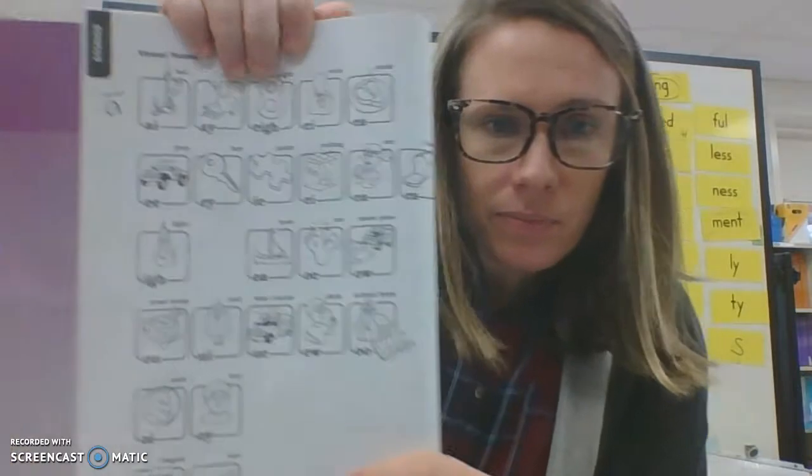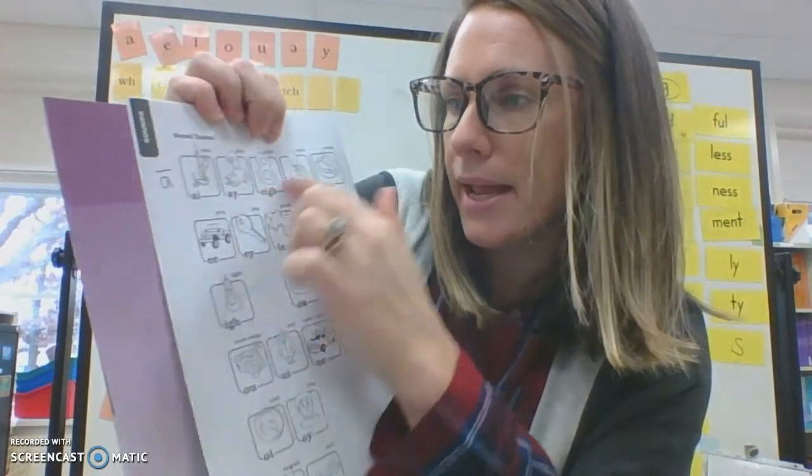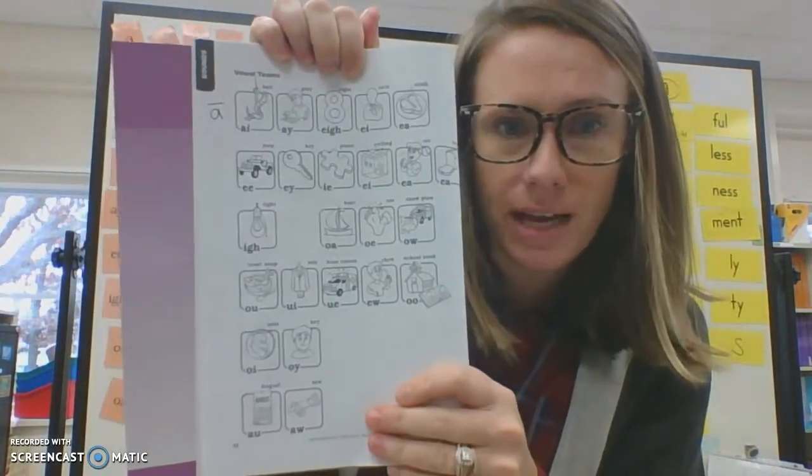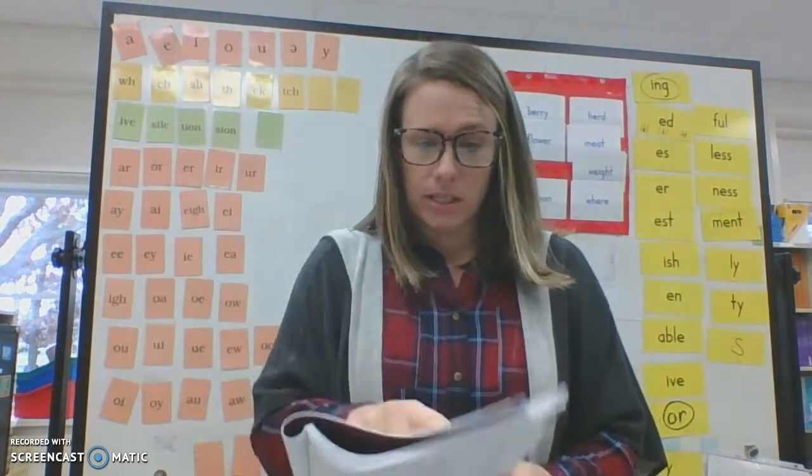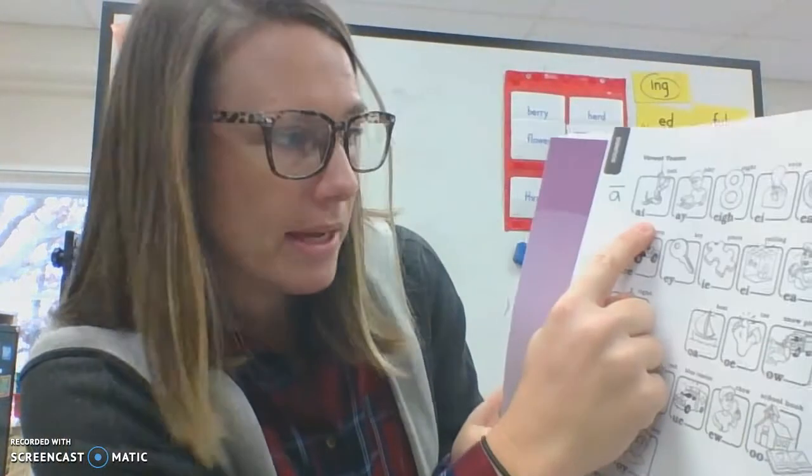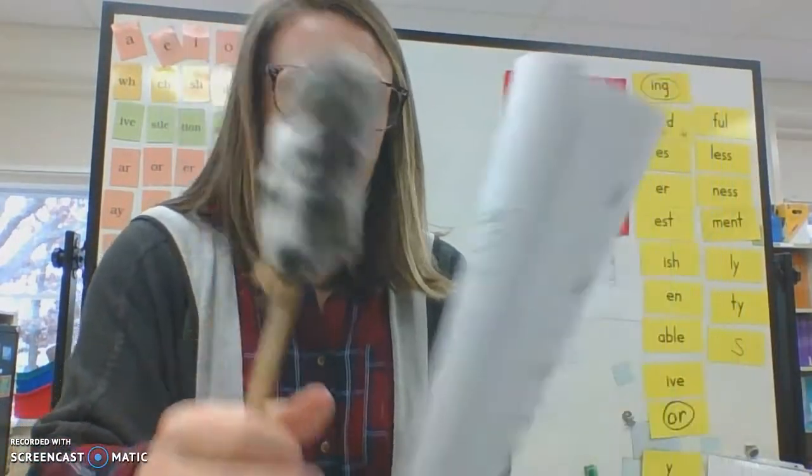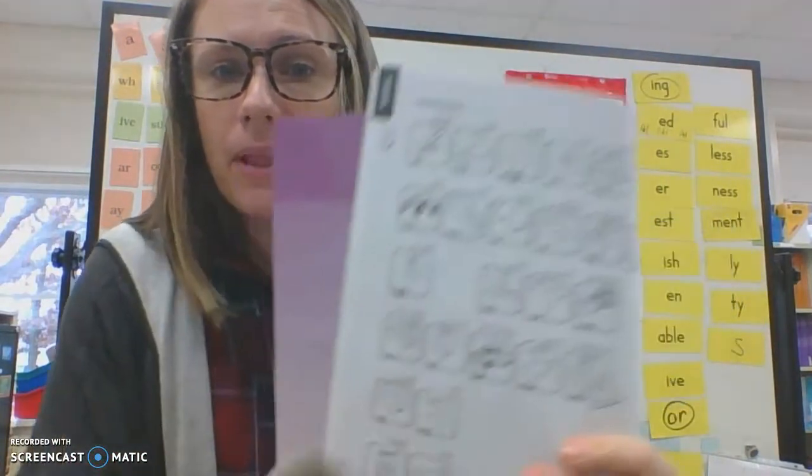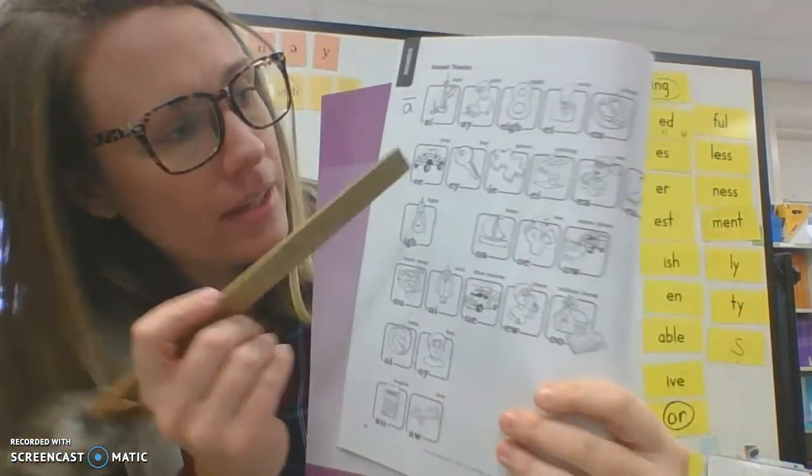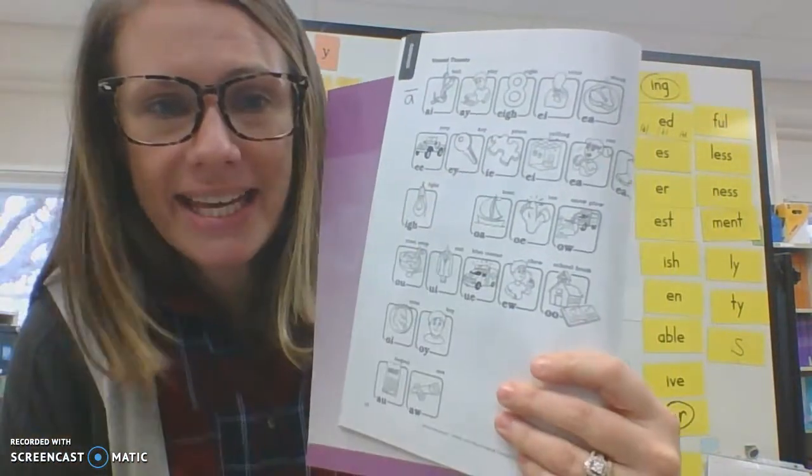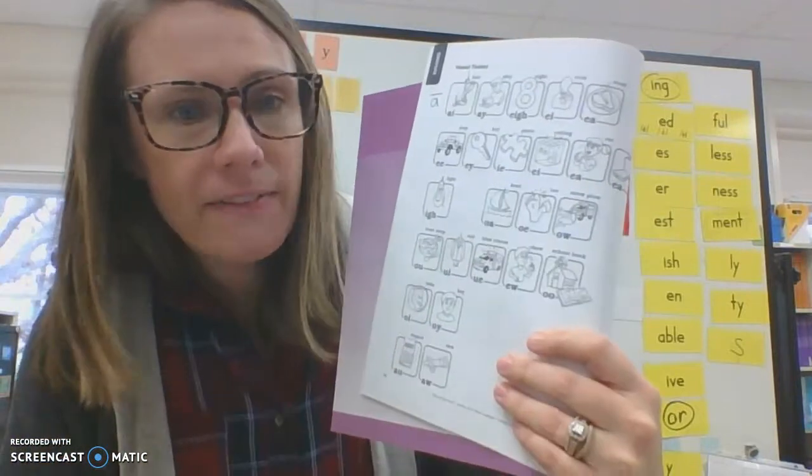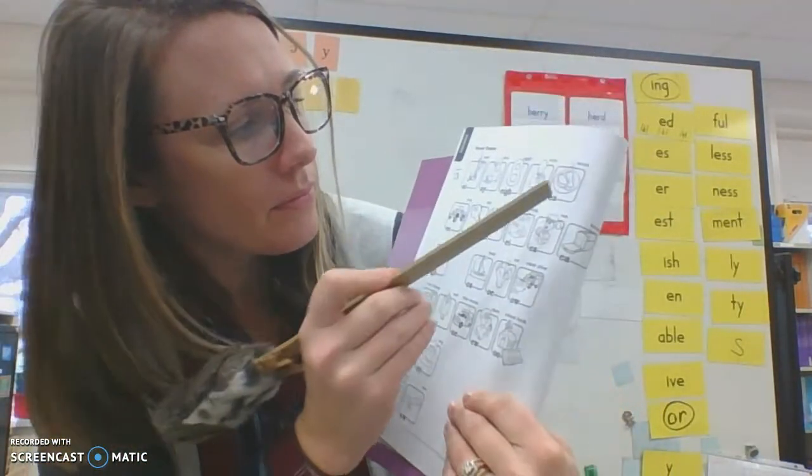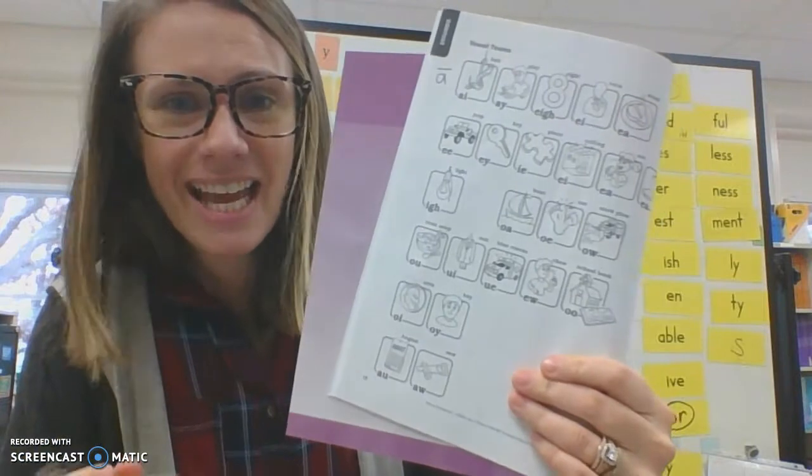Remember last week we labeled this long A because this first row all sounds like long A. So find this and let's start by reviewing these. Point to the first one and repeat after me. A-I, bait A. A-Y, play A. E-I-G-H, eight A. E-I, vein A. E-A, steak A. Excellent.